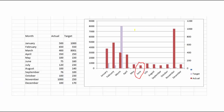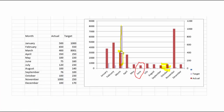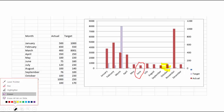Or I can use the highlighter feature. For example, I want to highlight this area, or this area, or whatever area — you can just simply highlight with the highlighter. And if you want to erase something, for example I want to erase this, I can simply erase it. Or if I want to erase all ink on the slide, I can use the 'erase all ink' option.